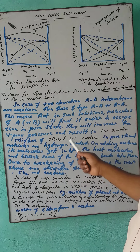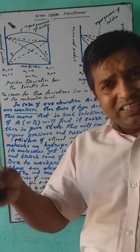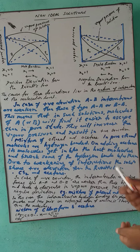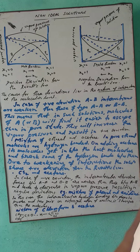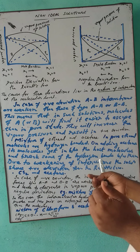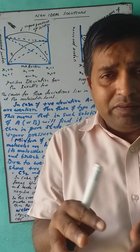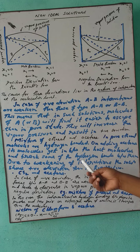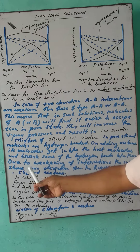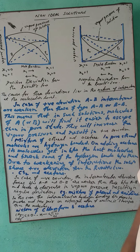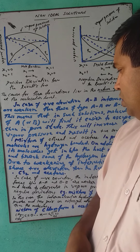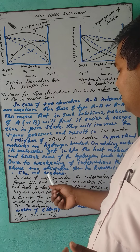An example is ethanol and acetone. In pure ethanol, hydrogen bonding is present. When acetone is mixed with ethanol, the interaction between ethanol and acetone weakens the original hydrogen bonding, causing easier escape of molecules and positive deviation from Raoult's Law. Another example is carbon disulfide and acetone — they also show positive deviation.